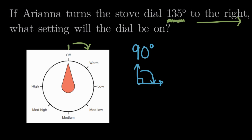So coming over to our dial, if we start at the top and we go 90 degrees, so we start here at the top and we go 90 degrees, we'd end up on the low setting. 90 degrees.